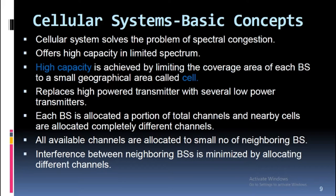Cellular system's basic concepts: The cellular system solves the problem of spectral congestion and offers high capacity in a limited spectrum. High capacity is achieved by limiting the coverage area of each base station to a small geographical area called a cell. It replaces high-powered transmitters with several low-power transmitters. Each base station is allocated a portion of total channels, and nearby cells are allocated completely different channels. Interference between neighboring base stations is minimized by allocating different channels.